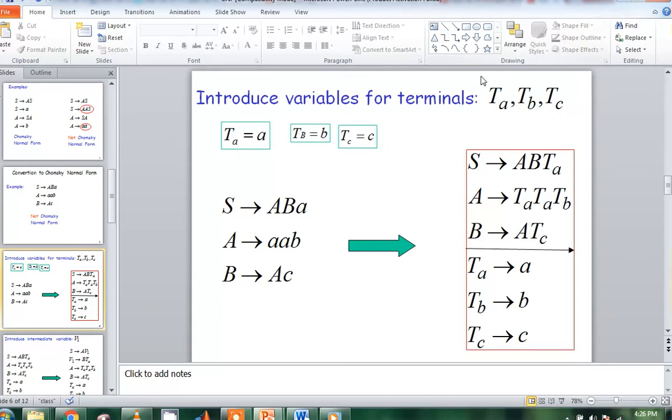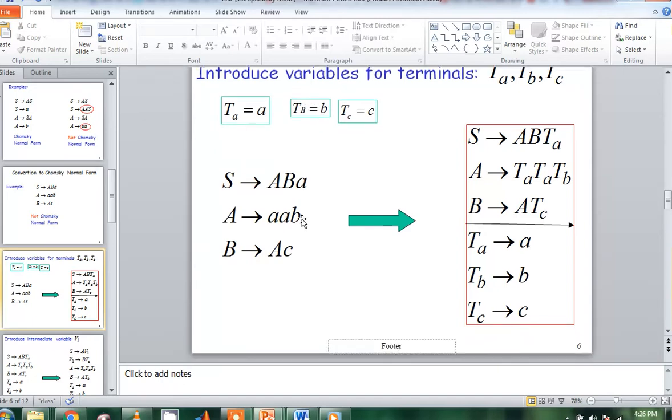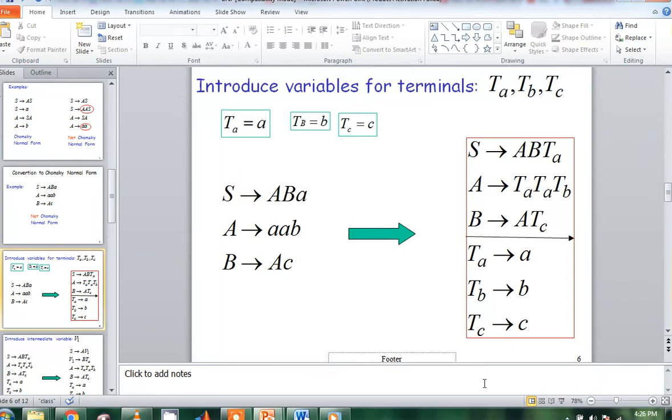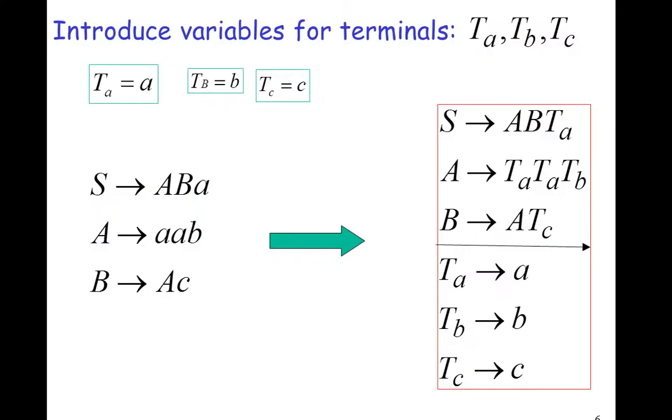Here we have temporary variables: Ta, Tb, Tc. Here we can represent Tb, Tc. Here we can start working on this. At the end, we can show that Ta mapping to a, Tb mapping to b, Tc mapping to c.